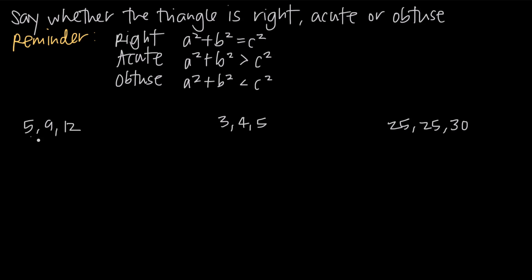When you're given three side lengths, how do you know which value is a, which is b, and which is c? The largest value is always going to be the value for c, and the other two don't matter. So in this case, 12 is going to be the value for c because it's the largest length. Then a equals 5 and b equals 9, or b equals 5 and a equals 9 — it never makes a difference. The only thing that matters is what value you assign to c.